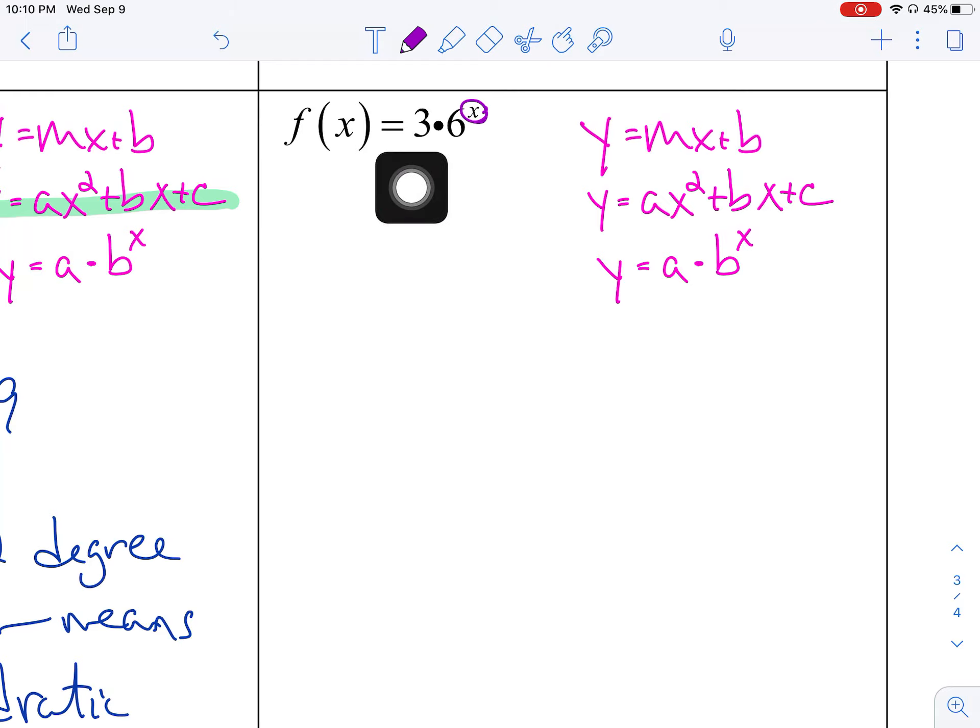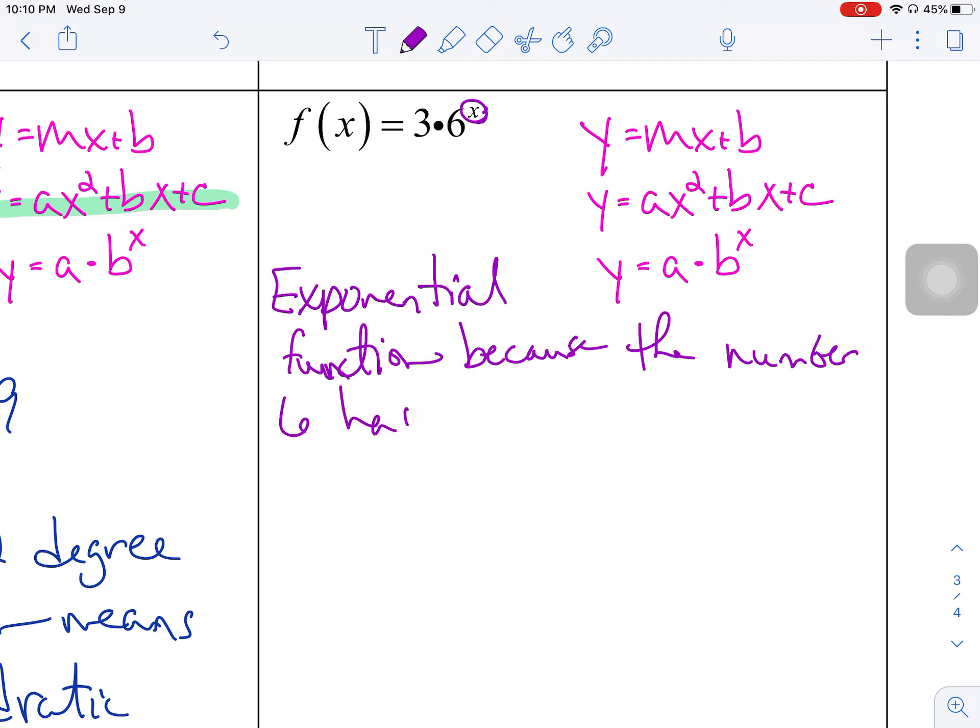But if you look at the format here, 3 matches up to this A. 6 matches up to B. And then you have x in the power of x. So this is exponential. An exponential function because the number 6 has an exponent of x.